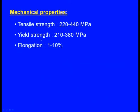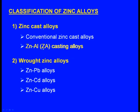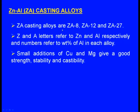Mechanical properties: tensile strength is between 220 to 440 MPa, yield strength 210 to 380 MPa, and elongation is 1 to 10 percent. Next, let us see zinc aluminum ZDA casting alloys. ZDA casting alloys are ZDA 8, ZDA 12 and ZDA 27 alloys. Z and A refer to zinc and aluminum respectively, and the number refers to the percentage weight of aluminum in each alloy.